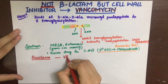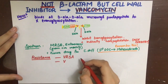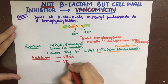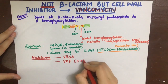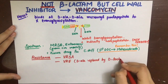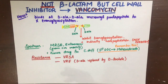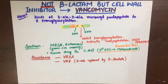Despite its activity against Staph aureus and enterococci, these pathogens have also developed resistance to vancomycin. Vancomycin-resistant Staph aureus (VRSA) has emerged, and so has vancomycin-resistant Enterococcus (VRE). Enterococcus has developed resistance to vancomycin by changing the terminal D-alanine amino acid to D-lactate.